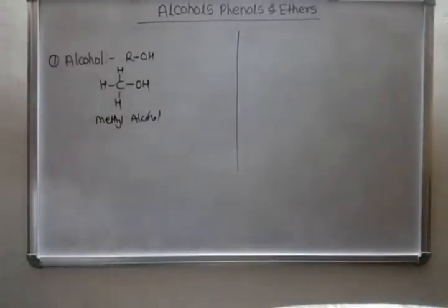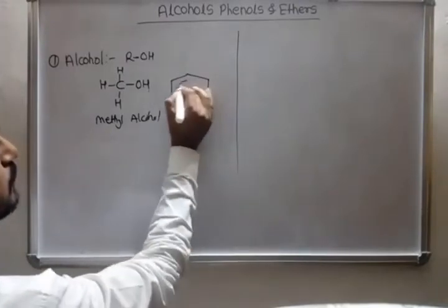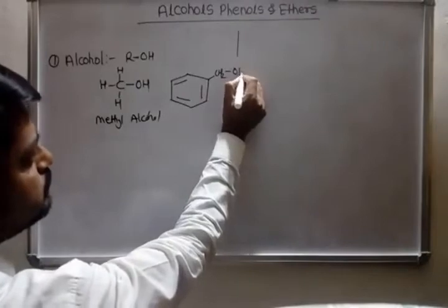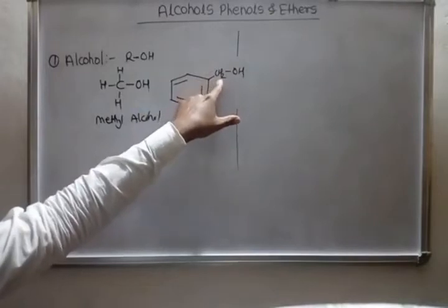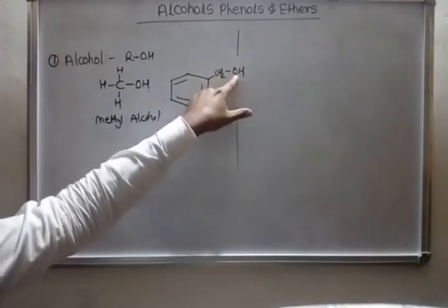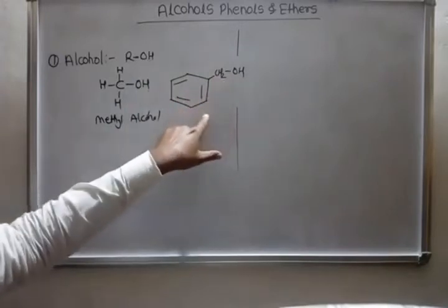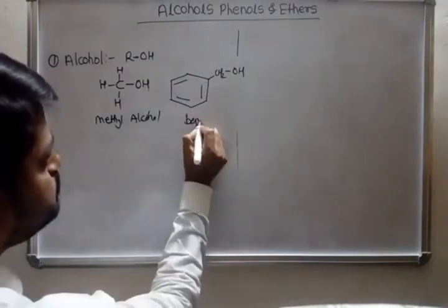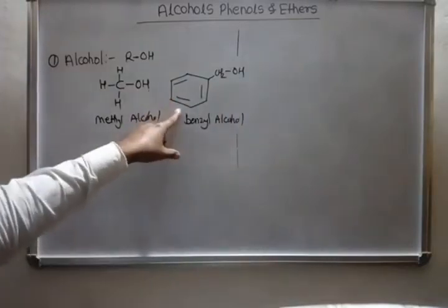Hydroxyl groups can also be present in aromatic compounds. Those are the aliphatic alcohols. Then aromatic alcohols: in this type, the aromatic ring is present on the side chain and the hydroxyl group is attached to the side chain in the phenyl or aromatic ring. These are the aromatic alcohols, and the name is benzyl alcohol.